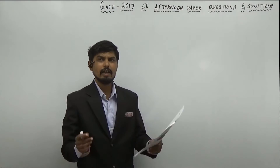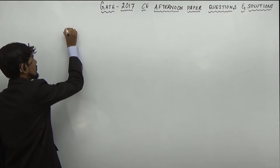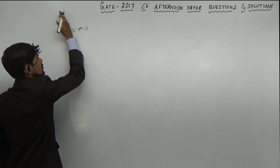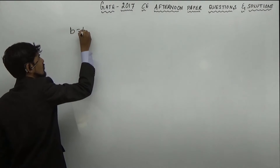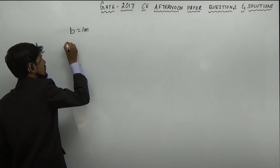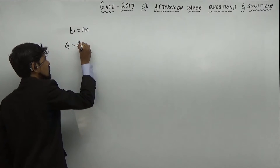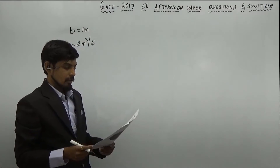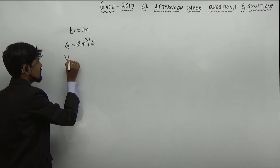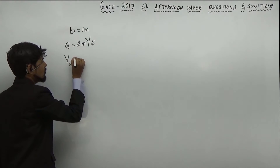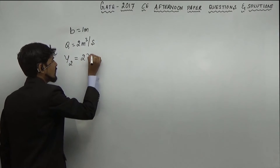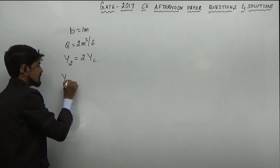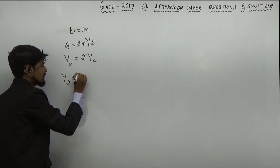So, what is given: it is a rectangular channel with B equal to 1 meter, discharge Q is equal to 2 meter cube per second. According to the problem statement, Y2 is equal to 2 times Yc. What we are supposed to find out is Y2.